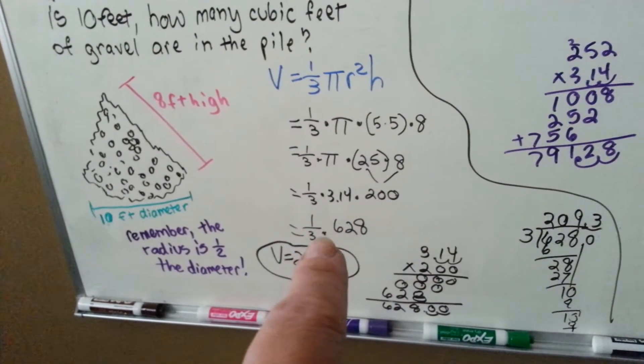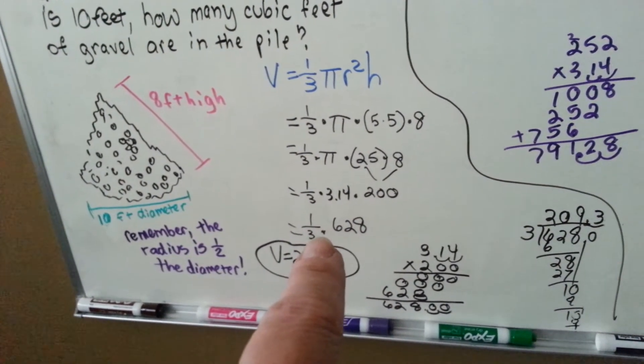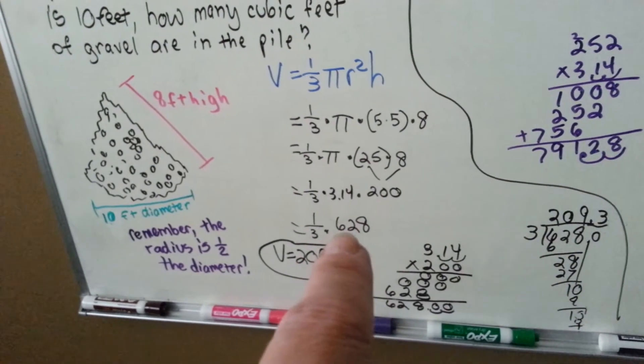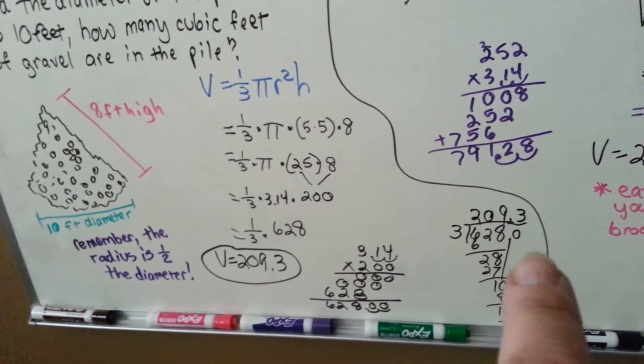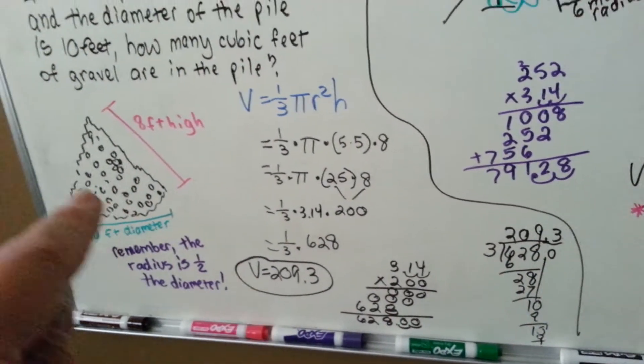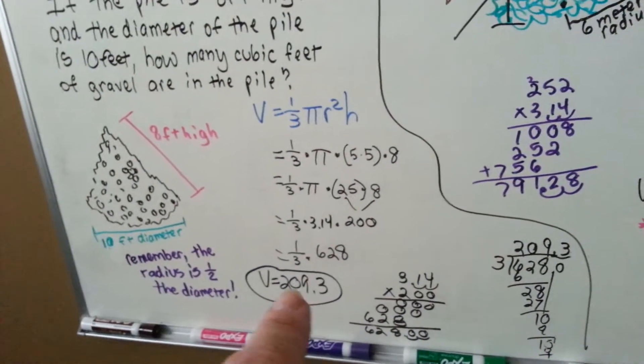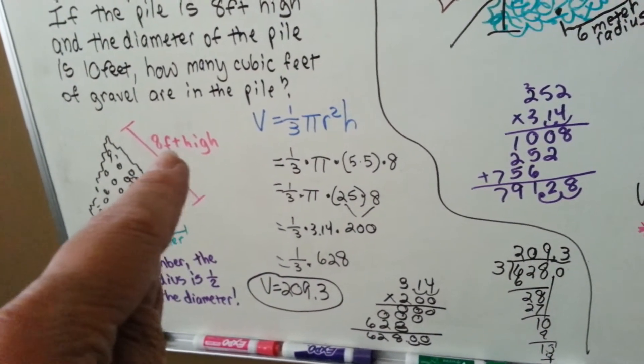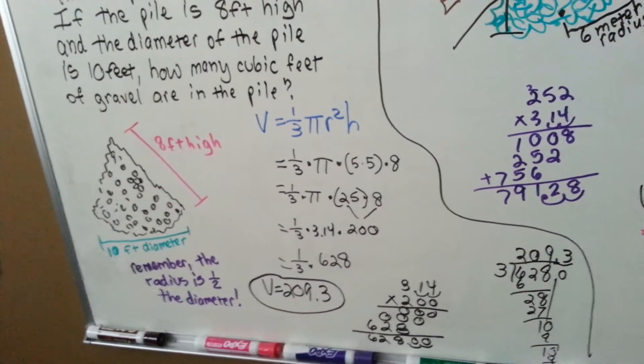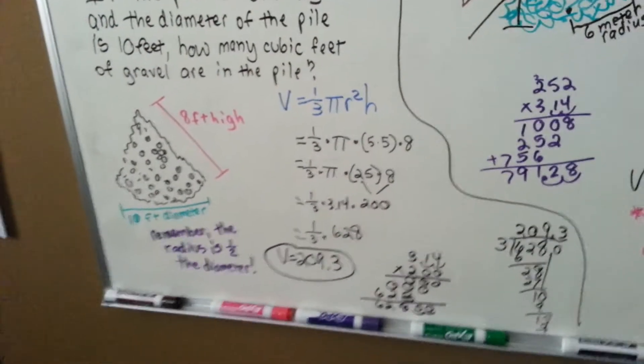Now, we need to divide that by 3. 628 divided by 3 comes out to 209.3. And that's our volume of the pile of gravel. 209.3 cubic feet, because it's dealing with feet. That is the label that we would put on it.